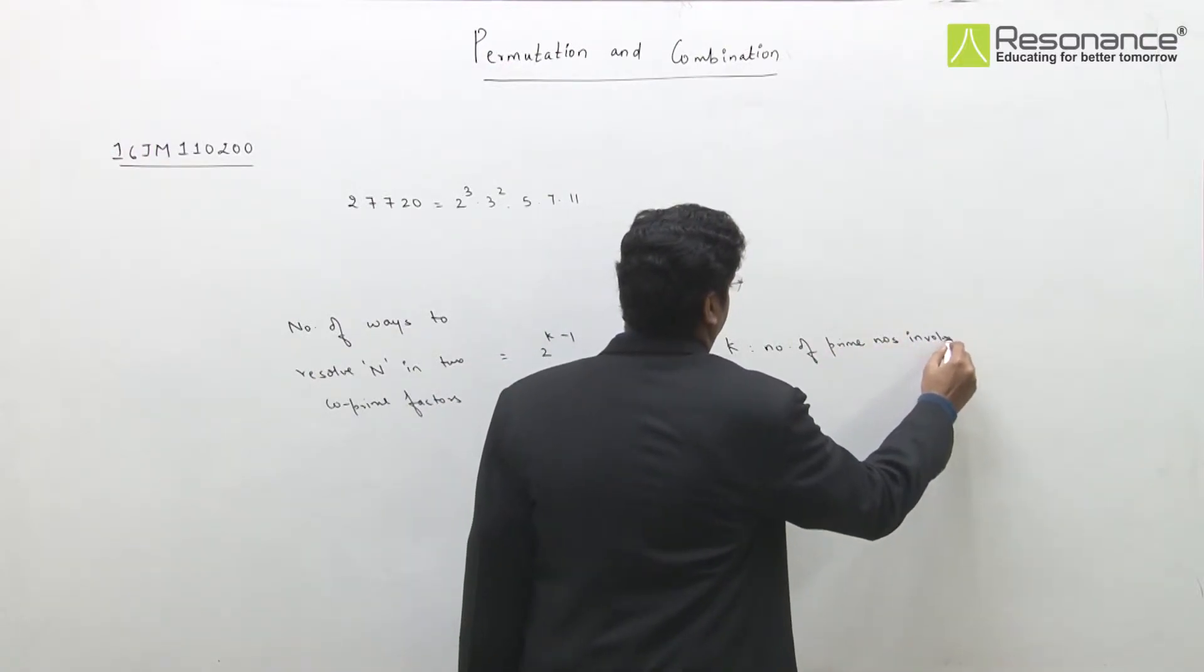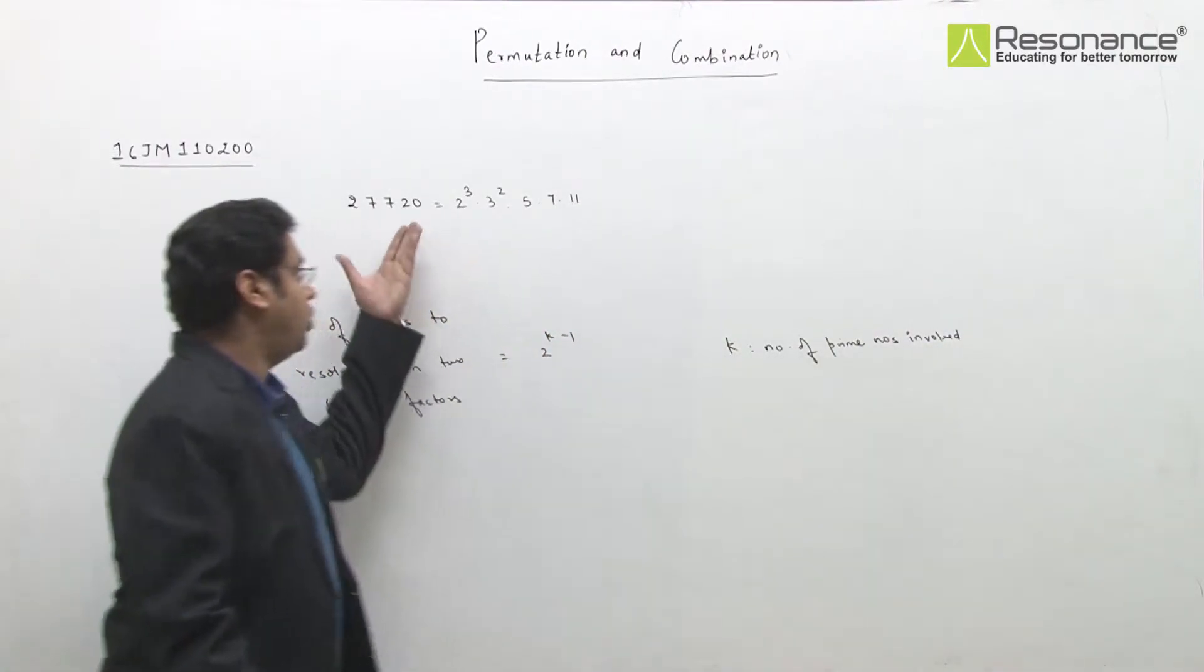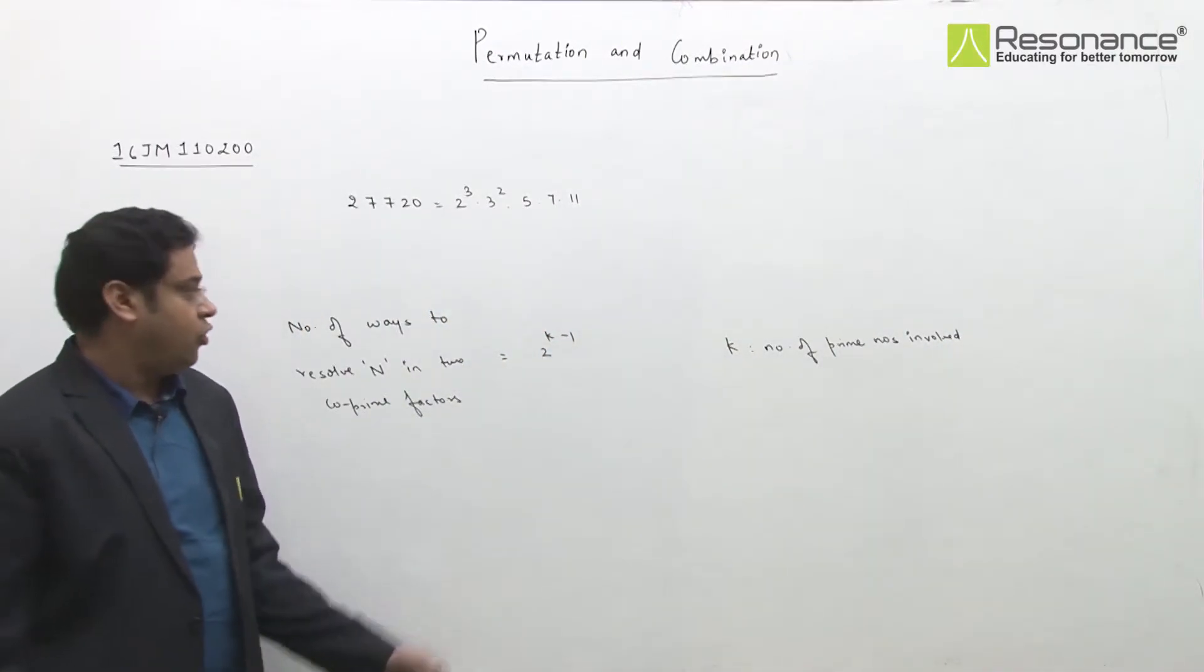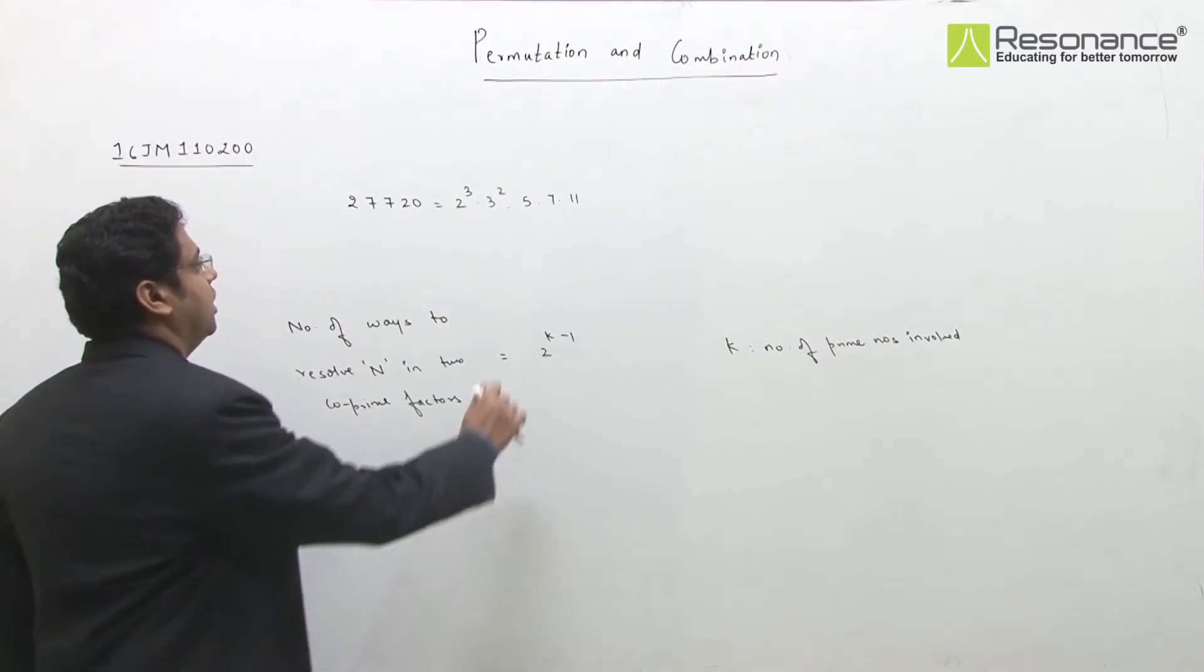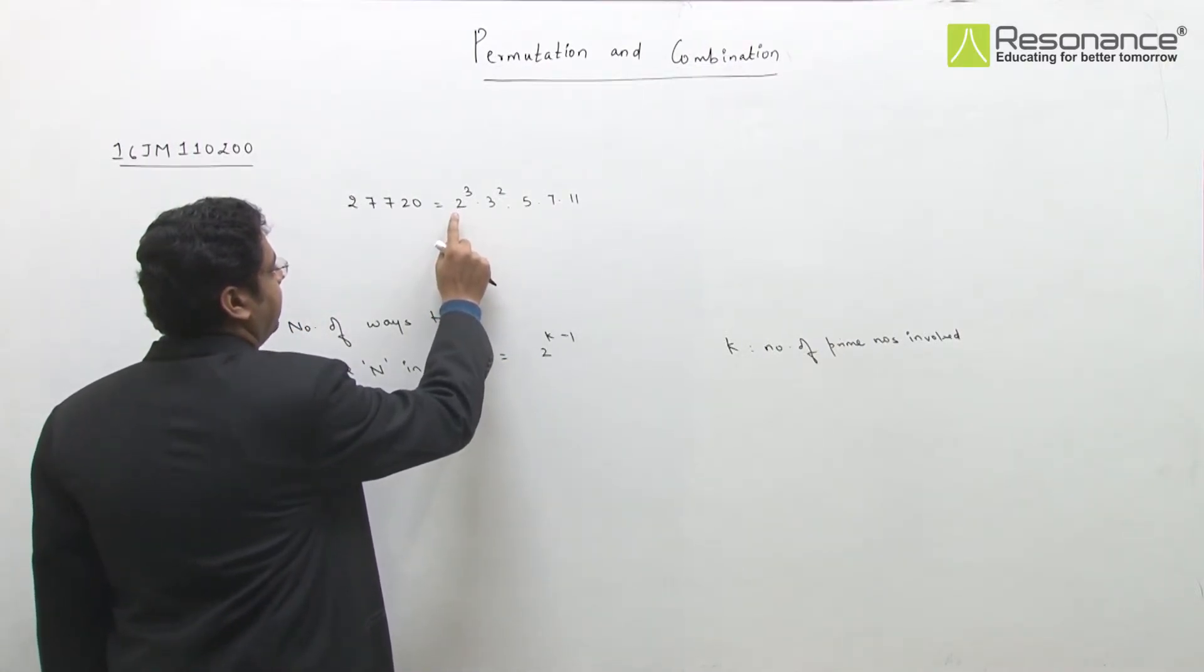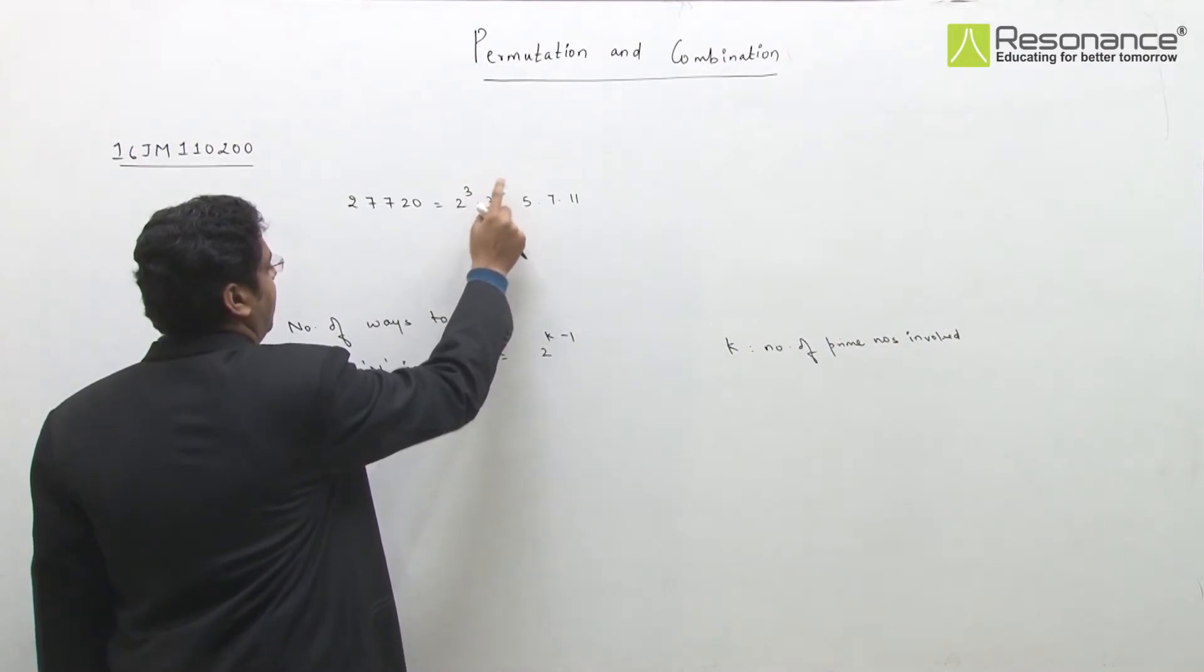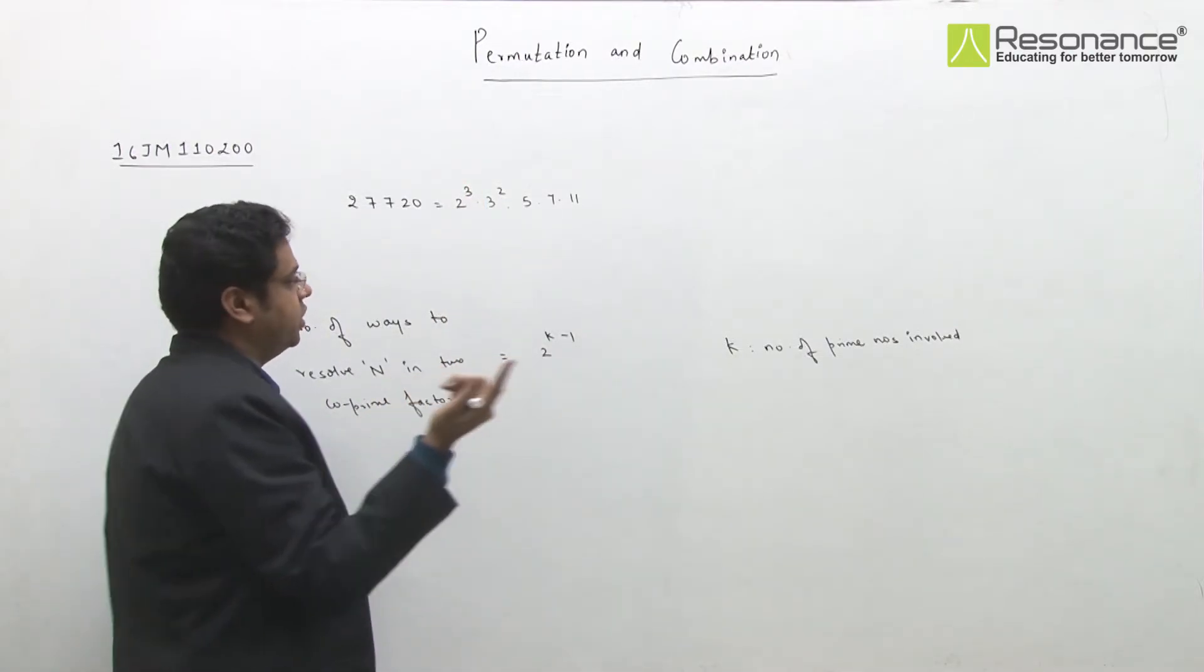Jitne bhi prime number involved hai, n ko likhne mein, woh k ki value ho jayegi. So 2 ki power k minus 1 is ka result ho jayegi. To hume bas itna dekhna hai ki kitne prime number involved hai. In ki jo power hai, is se koi matlab nahi.